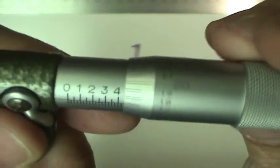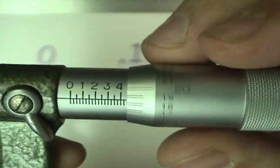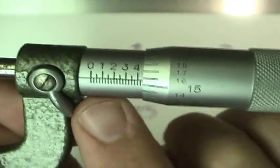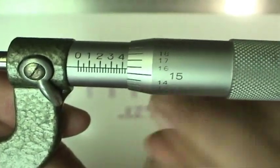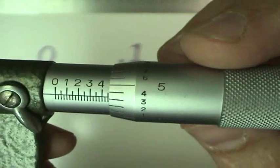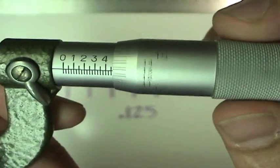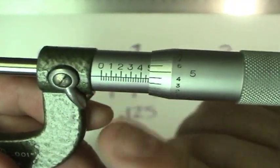That's going to come from this next scale, the scale that's on the thimble. This is the thimble, the part that rotates around. Now we know that between each of the small marks on the barrel scale, it's 0.025. But what do these marks represent?